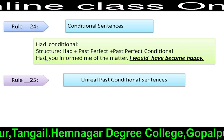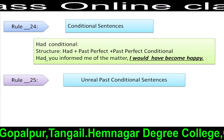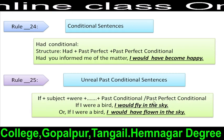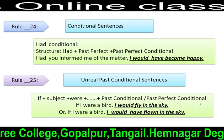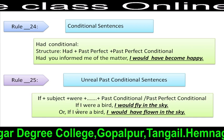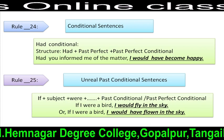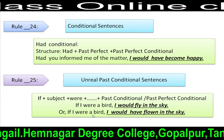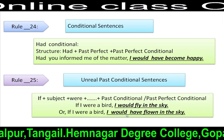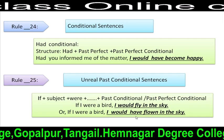Rule 25: Unreal past conditional — a condition that is not possible, perceptional, or imaginational. Structure: If + subject + were + extension + past conditional or past perfect conditional. We can use second or third conditional here. For example: 'If I were a bird, I would fly in the sky.' Or: 'If I were a bird, I would have flown in the sky.' — subject + would have/could have/might have + V3 + extension.